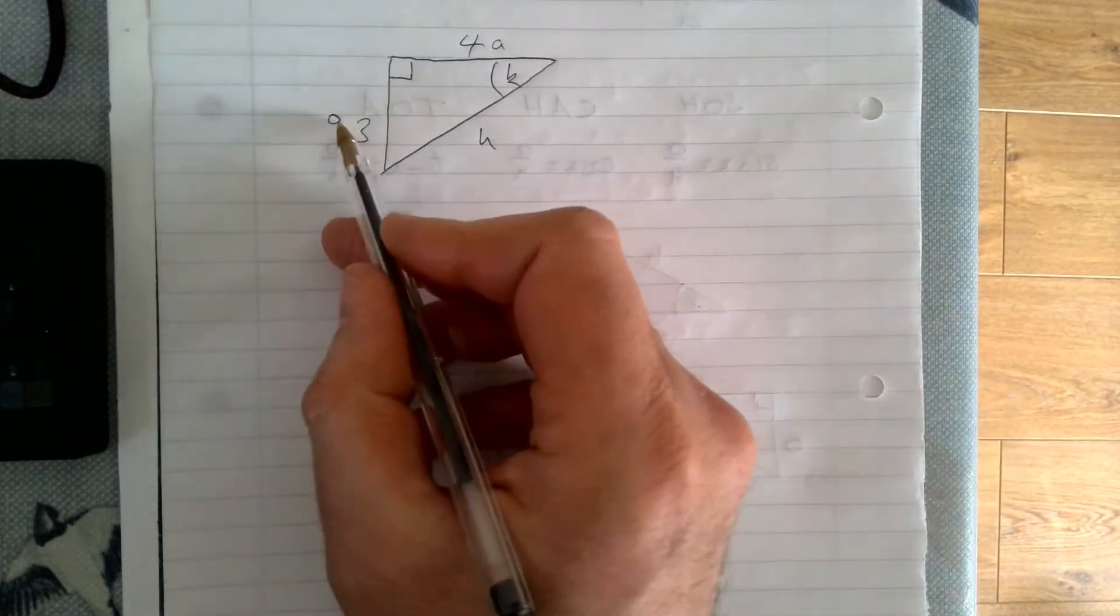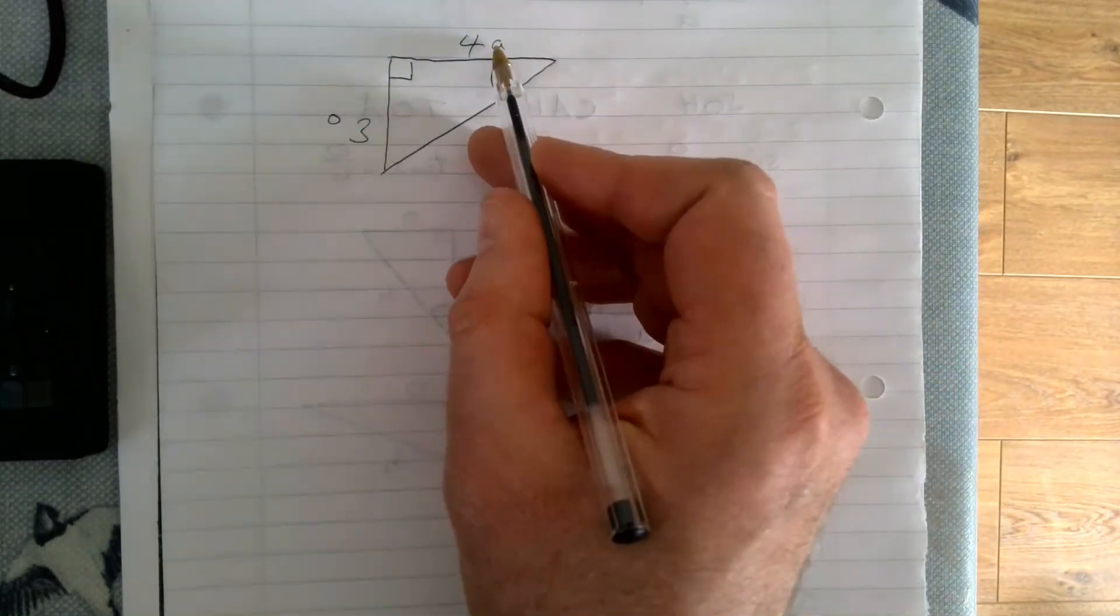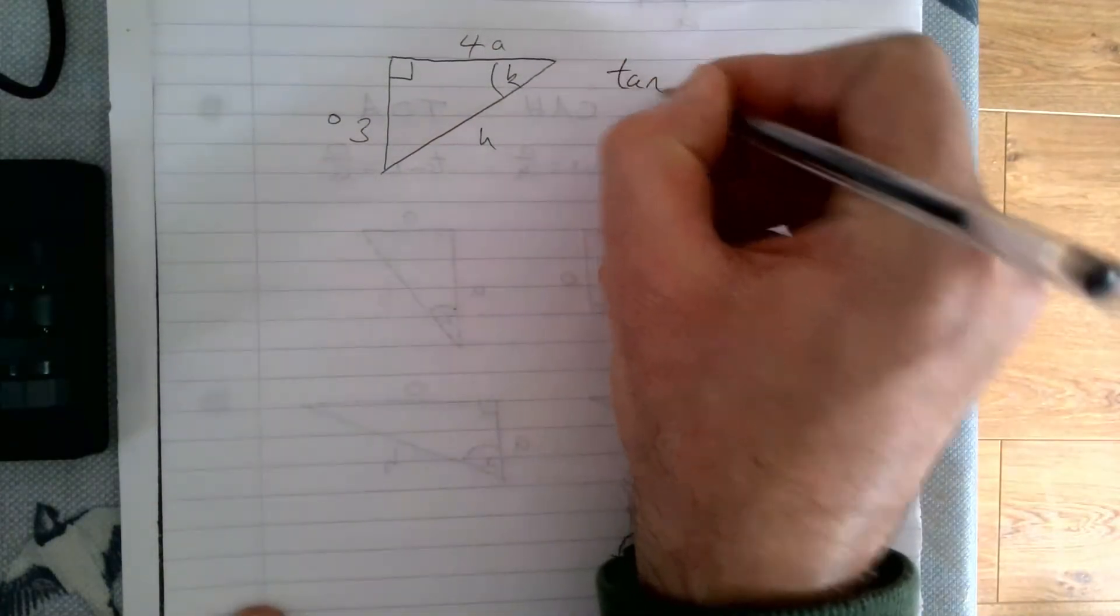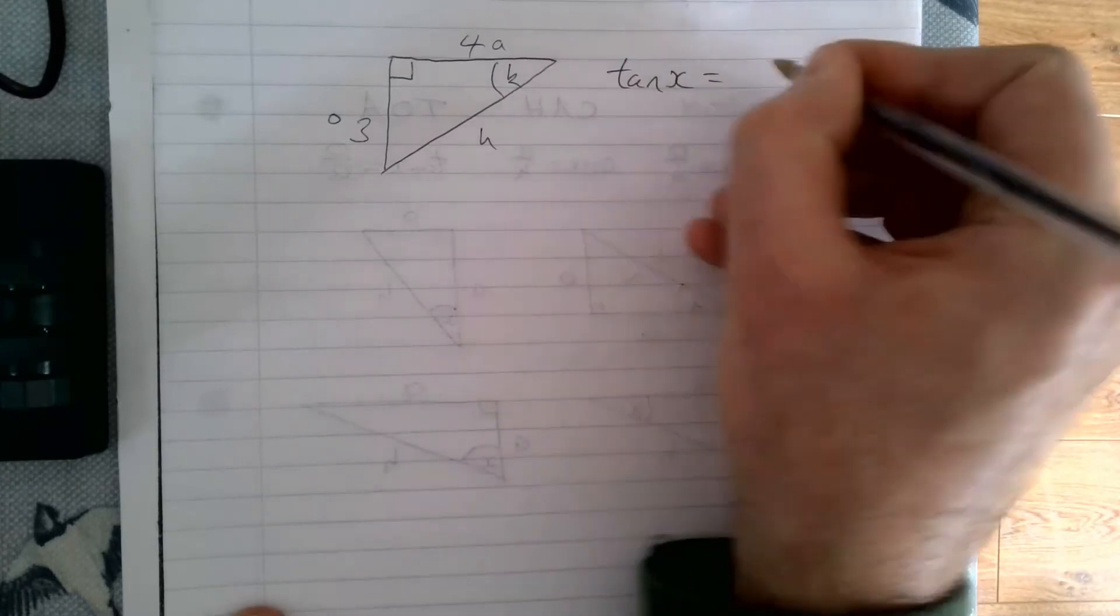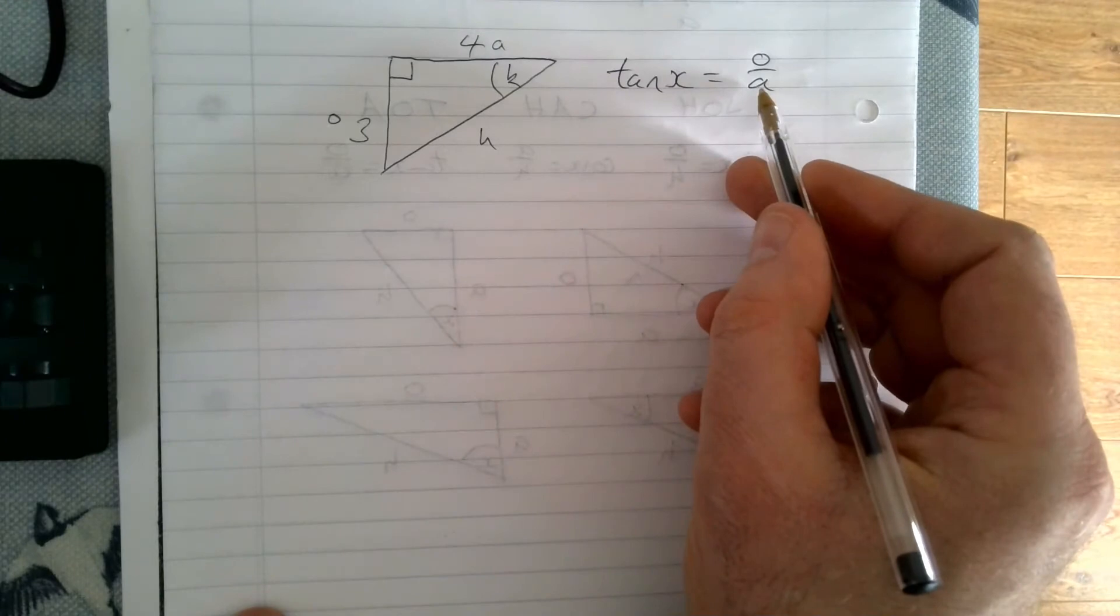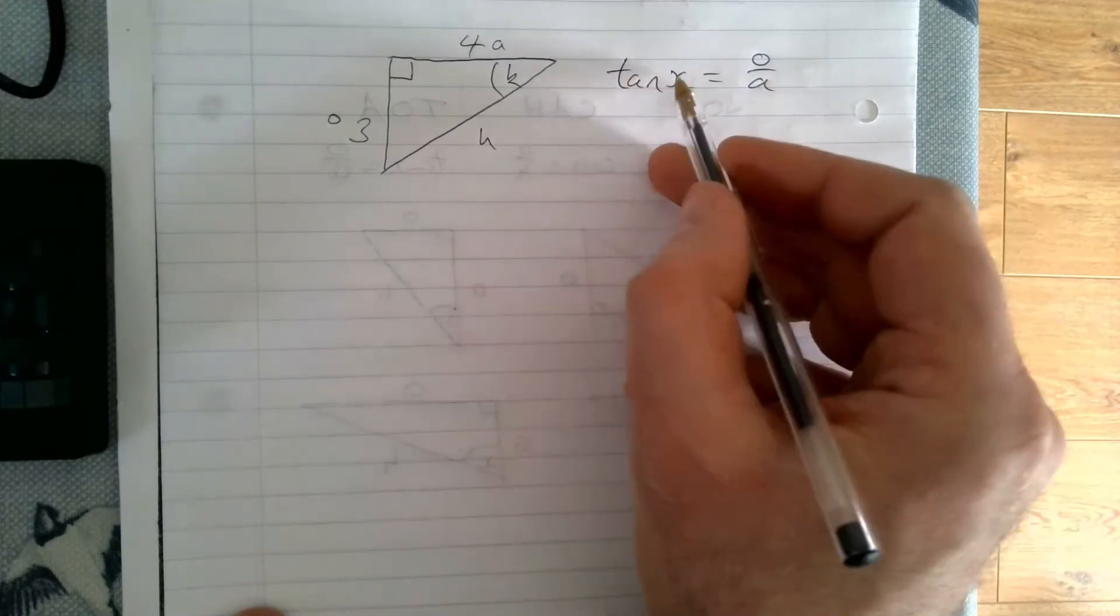We have O and we have A. If we look to SOHCAHTOA, that means we're going to have to use tan. Tan X equals O over A. You need to learn and commit this to memory.